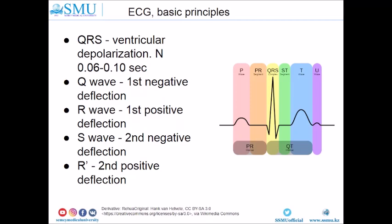The QRS complex represents ventricular depolarization. Normally, the duration of the QRS complex should be less than 0.10 seconds or 2.5 small boxes. The Q-wave is the first negative deflection of the QRS complex. The R-wave is the first positive deflection, and the S-wave is the second negative deflection. R-prime (R') is the second positive deflection. If the amplitude of any of these waves is less than 5 mm, they are represented by small letters.